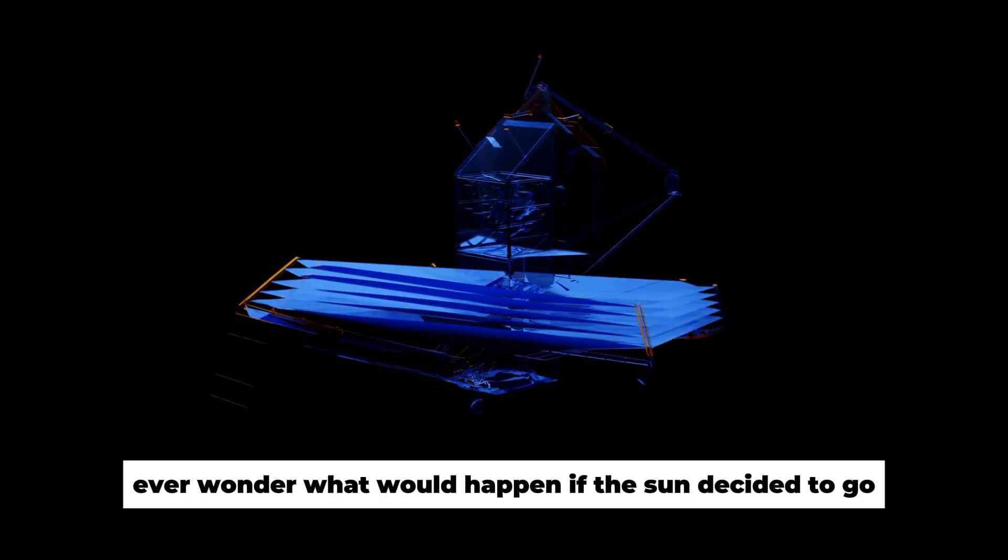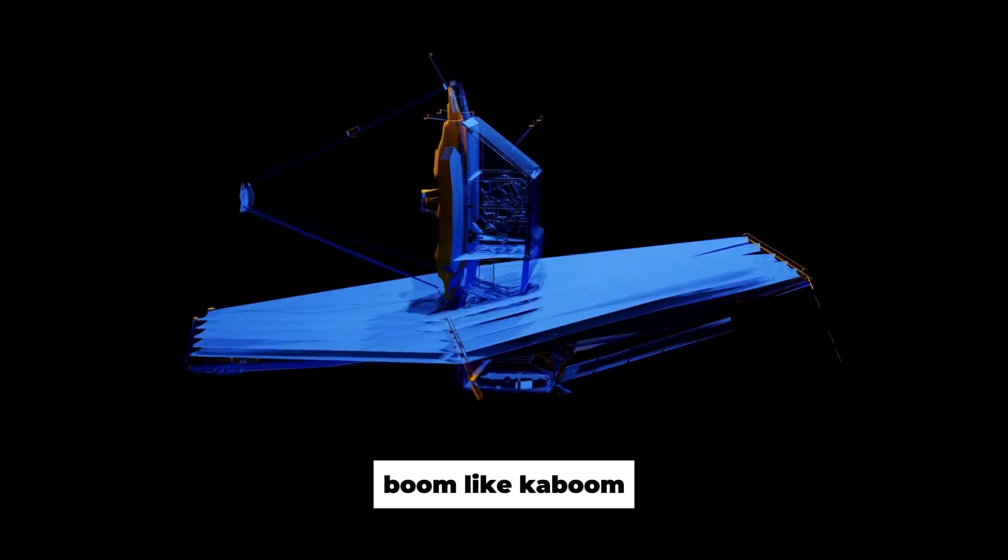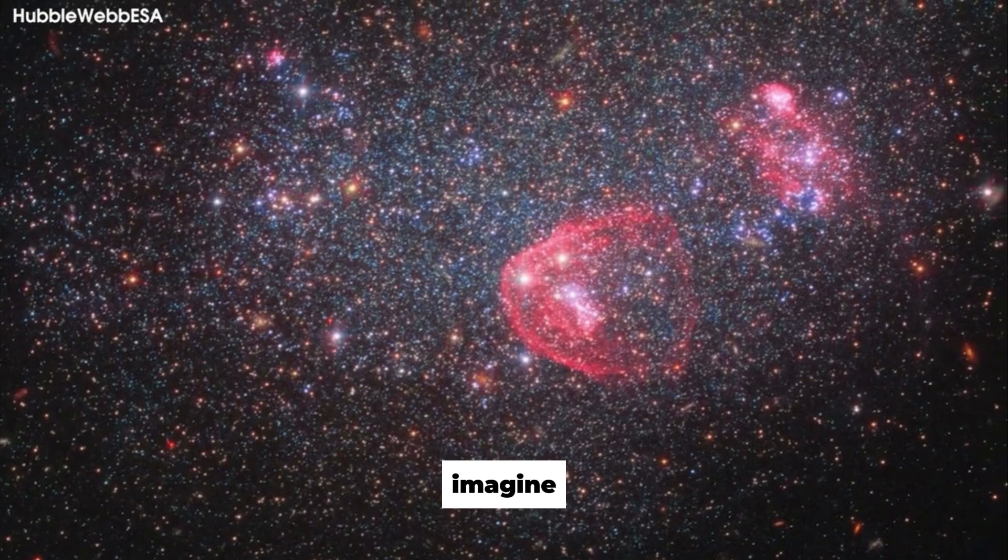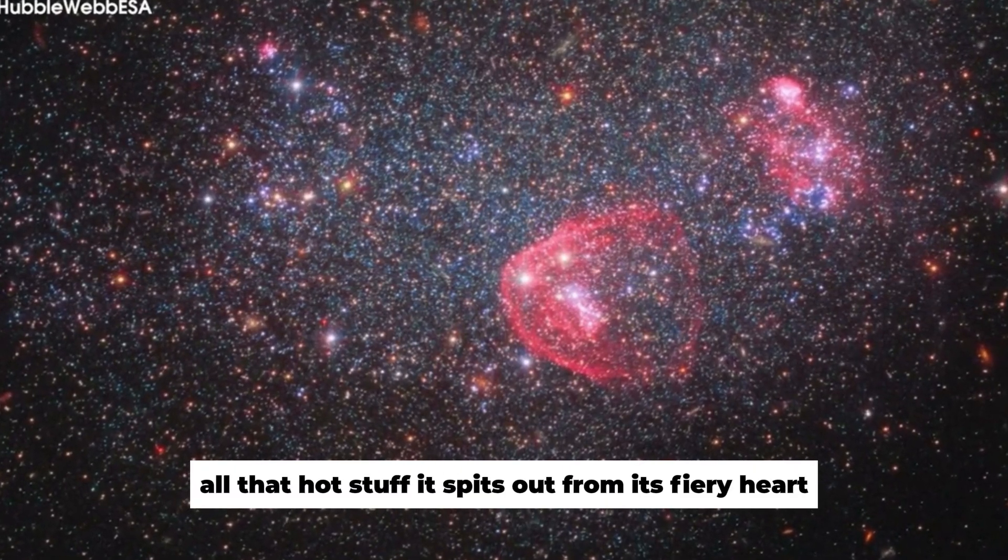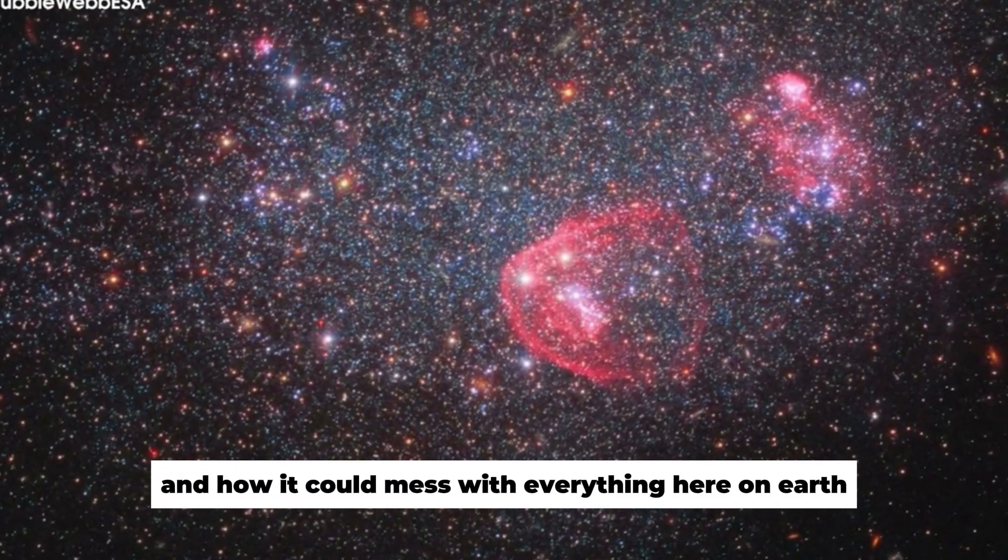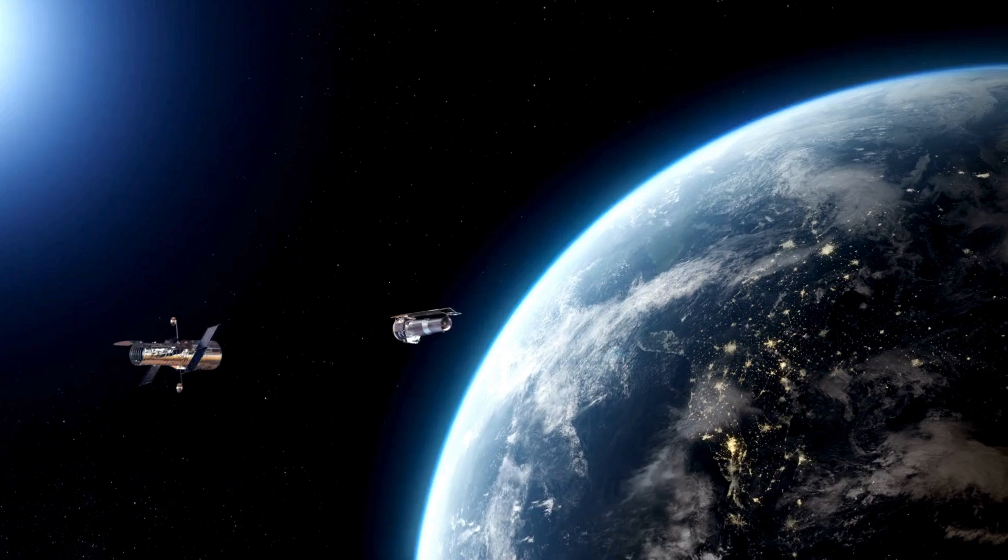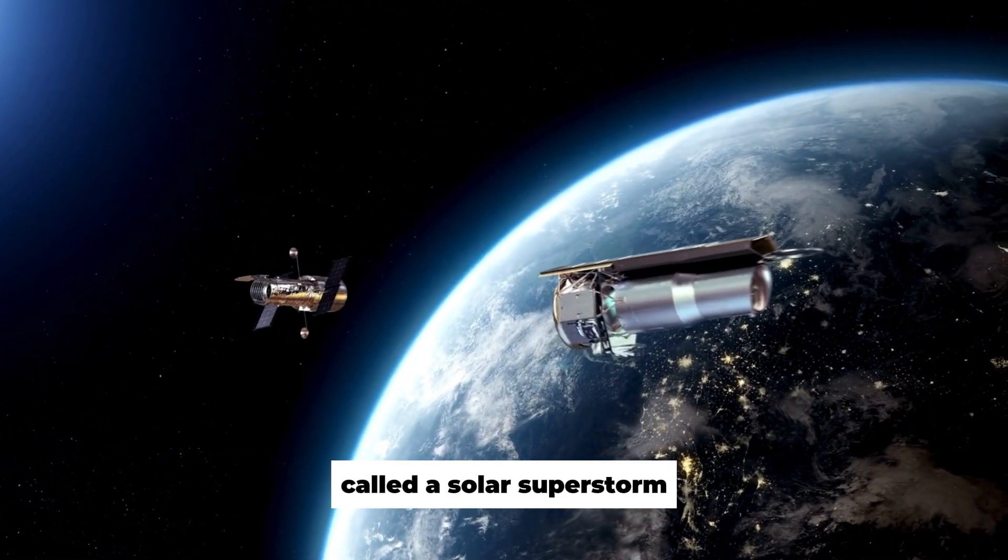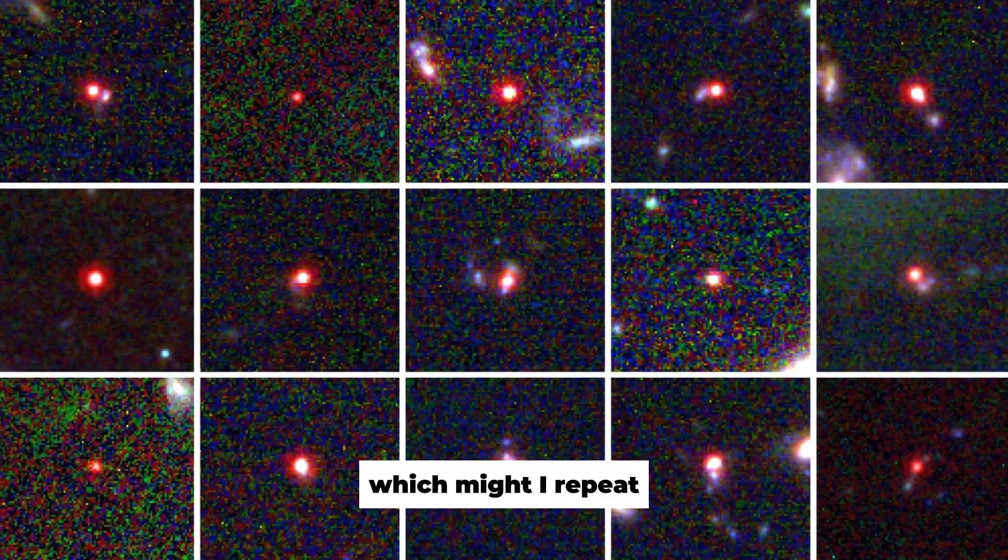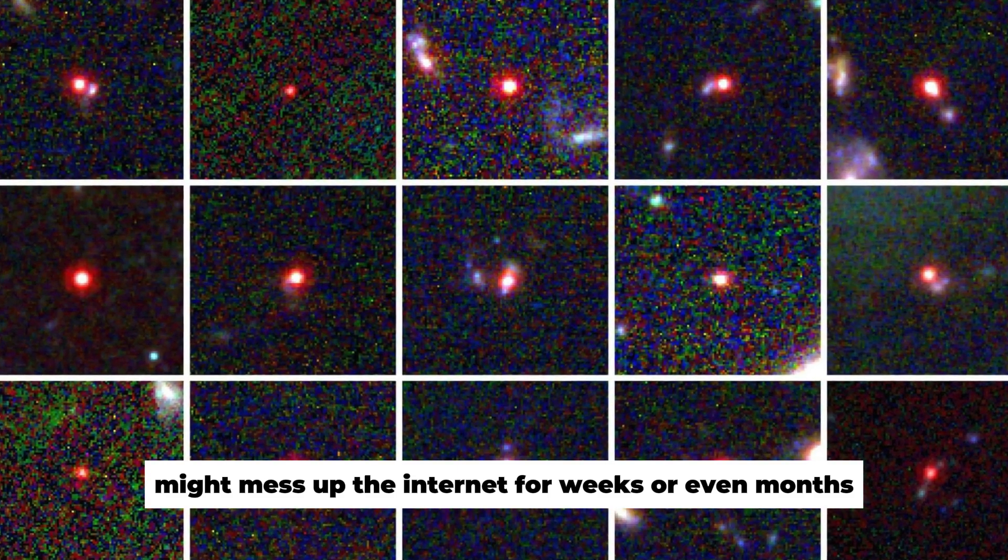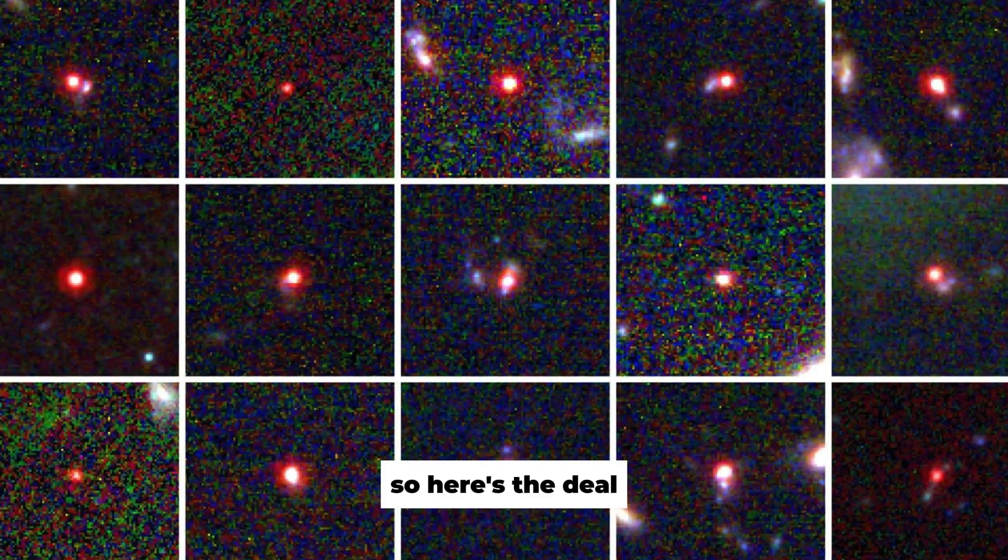Hey, ever wonder what would happen if the sun decided to go boom? Like, kaboom! Imagine all that hot stuff it spits out from its fiery heart and how it could mess with everything here on Earth. Scientists are talking about this thing called a solar superstorm, which might, I repeat, might mess up the internet for weeks or even months. So, here's the deal.